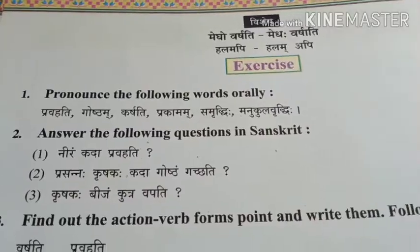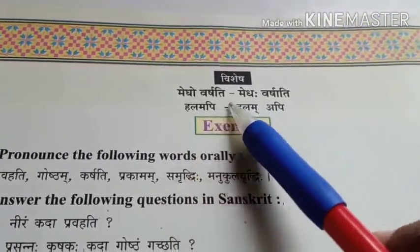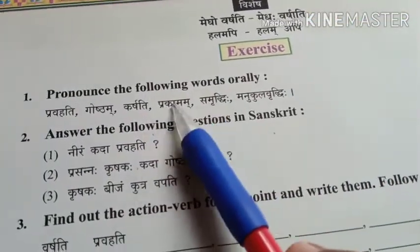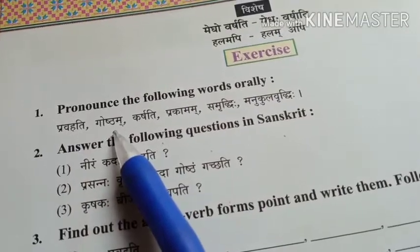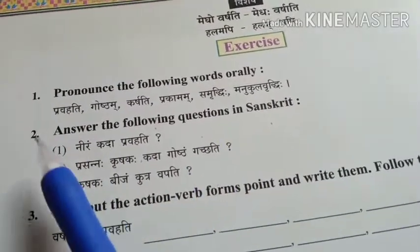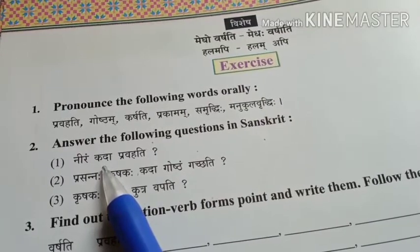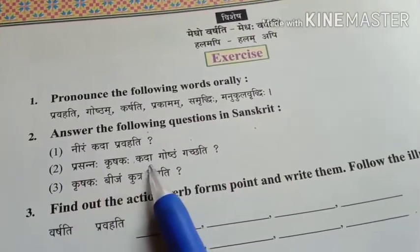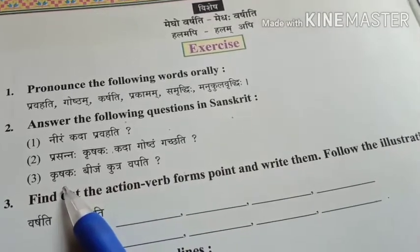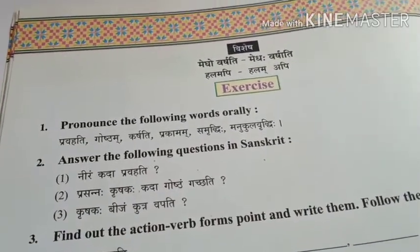Let's start. Students, first we complete Lesson 2 'Megha Varsyati' in the textbook. Visheshah: Megho Varsyati, Megha Varsyati, Alam Api, Alam Api. Now Exercise Question 1: Pronounce the following words orally — Pravahati, Goshtam, Karshati, Prakamam, Samruddhi, Manukul, Vriddhi. Question 2: Answer the following questions in Sanskrit. Niram kada pravahati? Yada Megha Varsyati tada Niram Pravahati. Prasanna Krushakaha kada Goshtam Gacchati? Niram Pravahati tada Prasanna Krushakaha Goshtam Gacchati. Krushakaha Bijam kutra vapati? Krushakaha Kshetre Bijam Vapati.